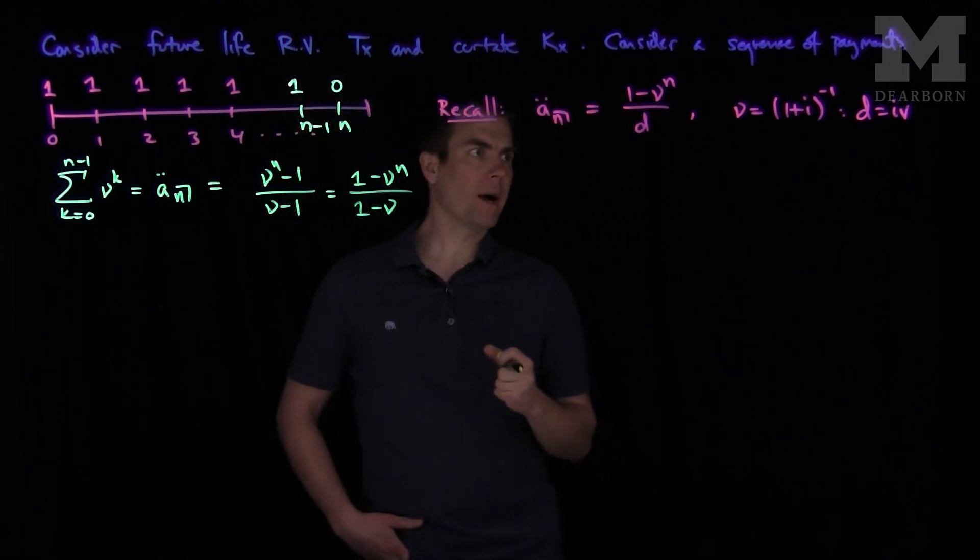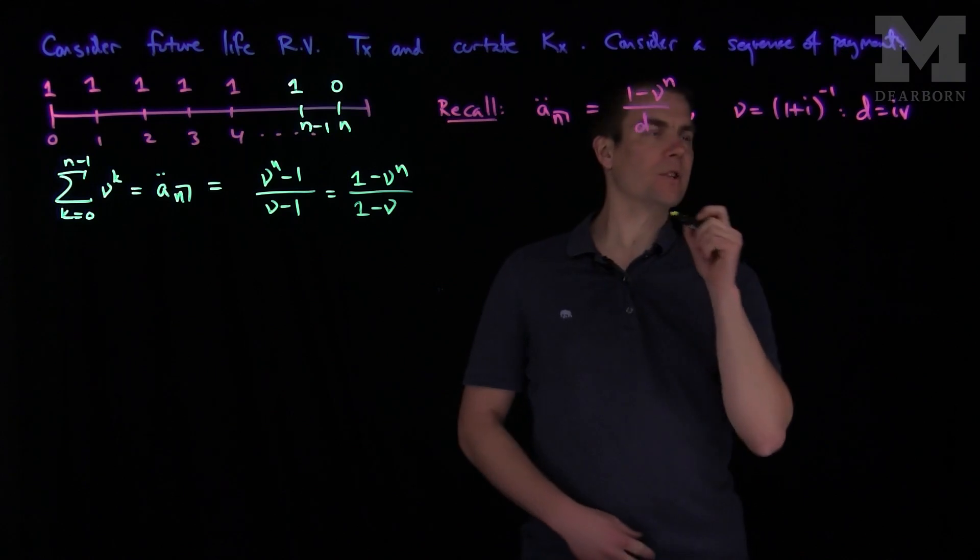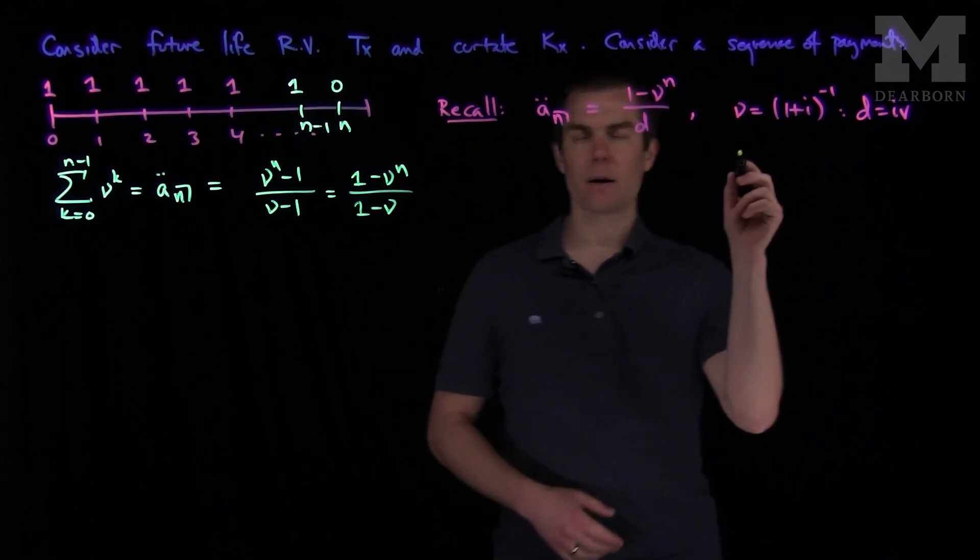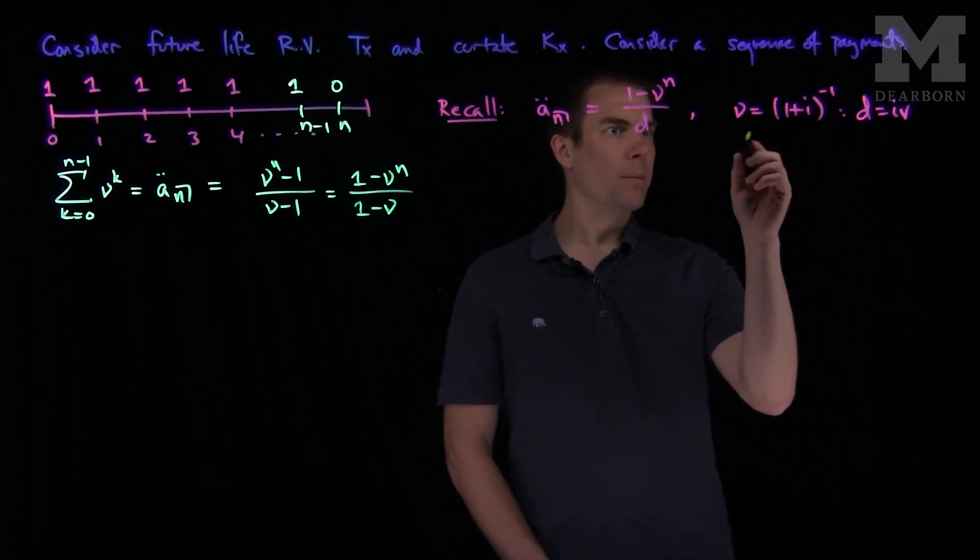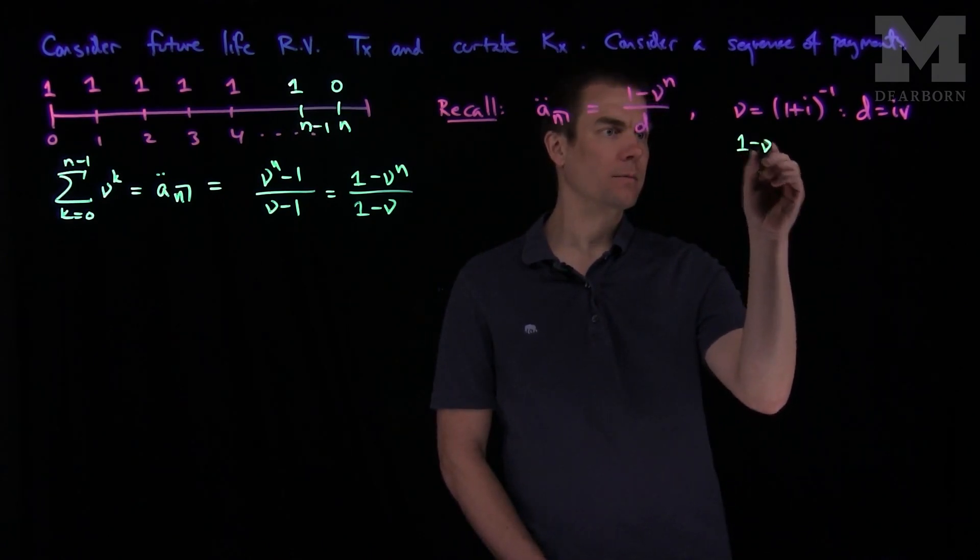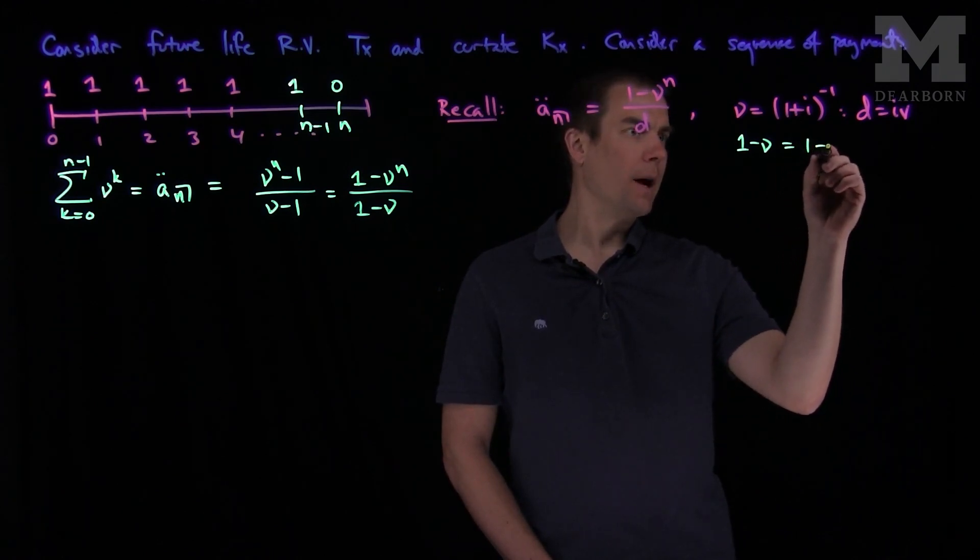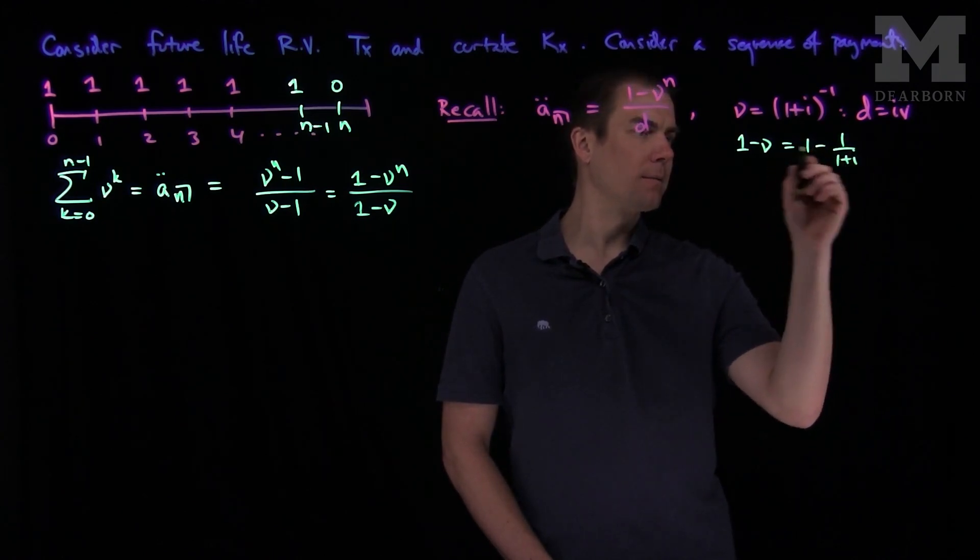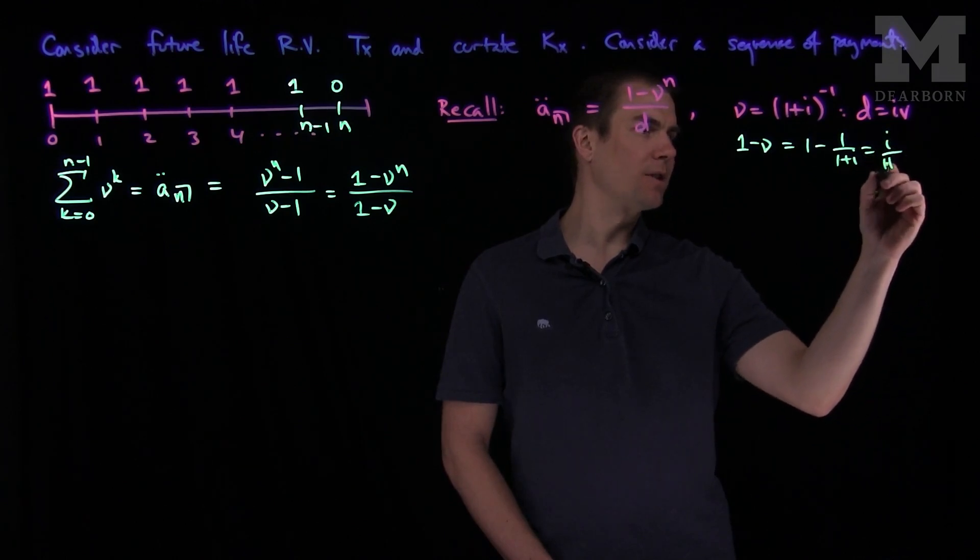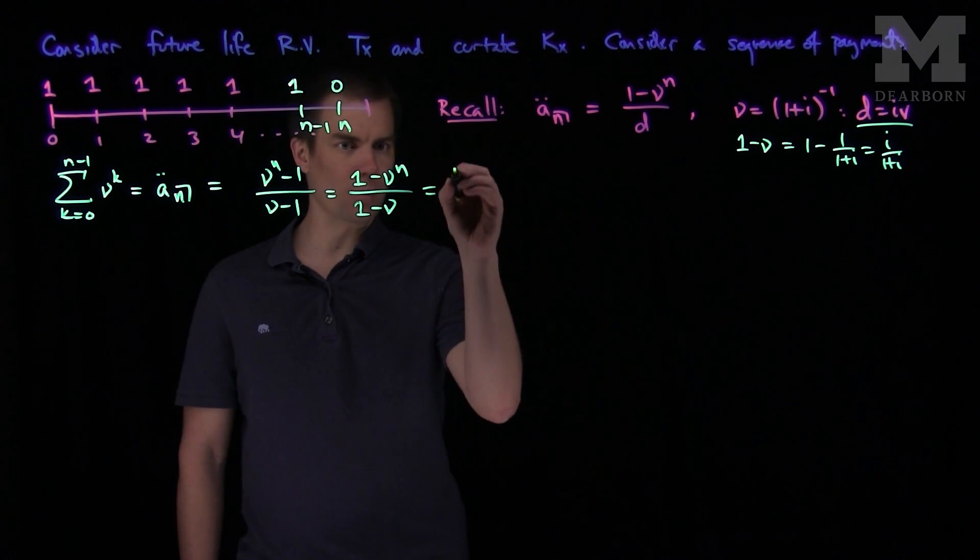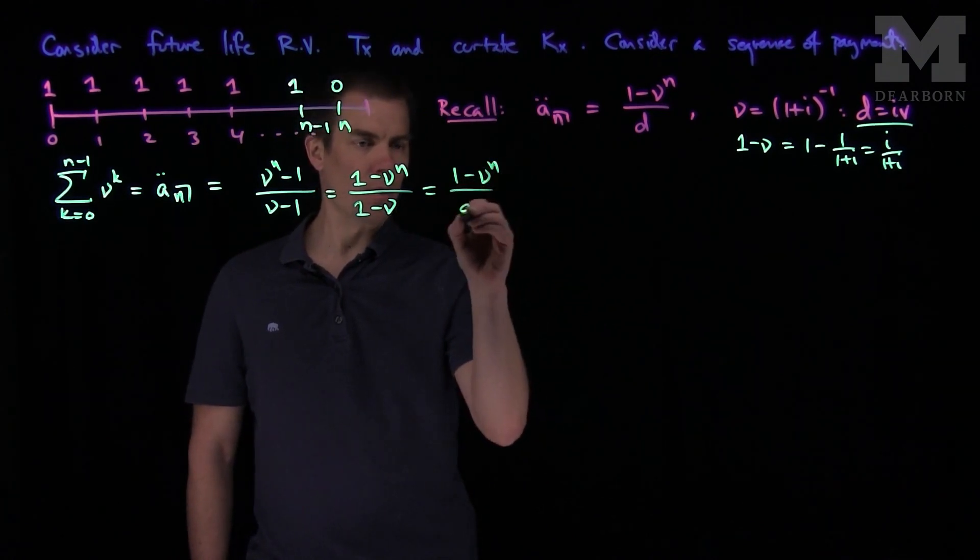And I know that 1 minus nu, so we know that nu is the reciprocal of this. So if I multiply this nu by i, I'll get d. So 1 minus nu is 1 minus 1 over 1 plus i, and that is i over 1 plus i. And we can see that i over 1 plus i is exactly equal to d. So this is exactly equal to 1 minus nu to the n over d.